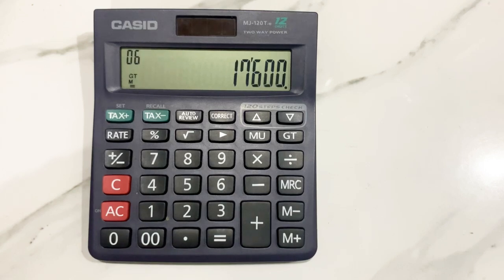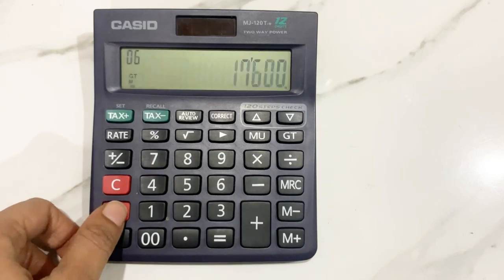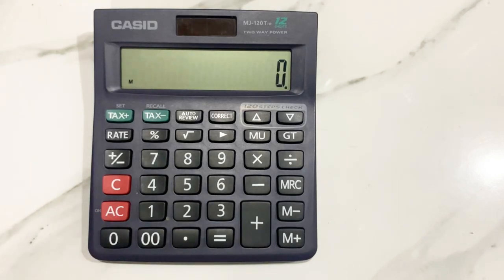So here's our final answer: 17,600, the final price after 12% off. So this is how you can calculate 12% off any price using your calculator. This is all for today's video. Please like and subscribe my channel. Thank you so much.